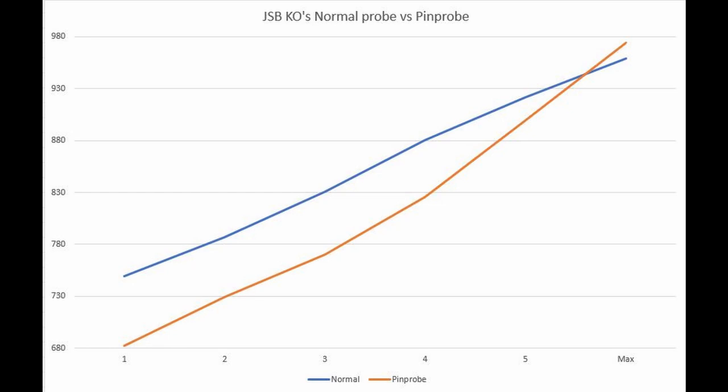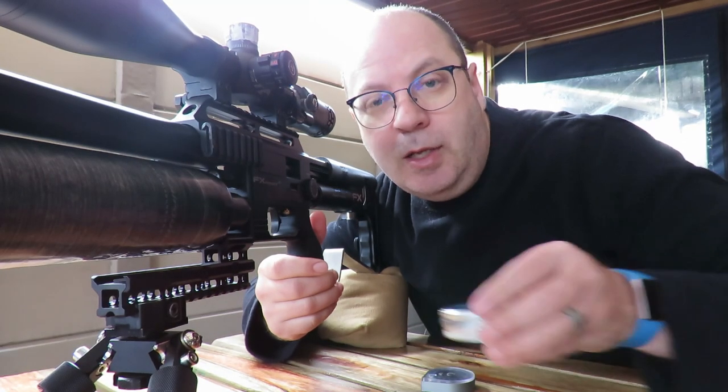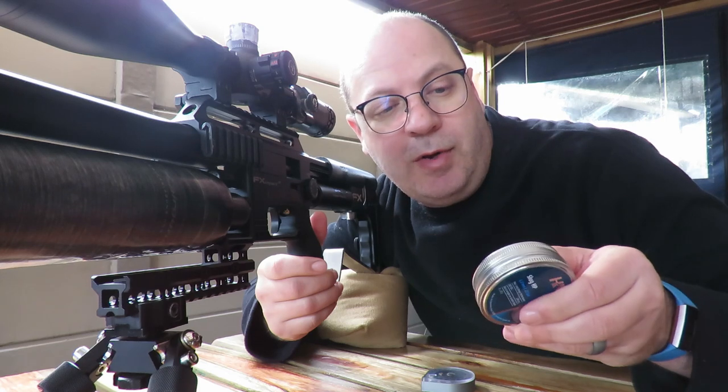This can be due to the fact that the KO's are 0.216s, it's also a cup base. There's a lot of air lost on the sides where the pin probe pushes a lot of the air to the sides and not to the middle like a normal pallet probe. Let's see what they do with the flat base H&Ns.